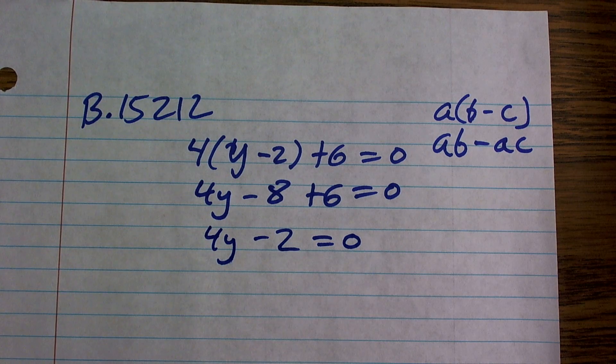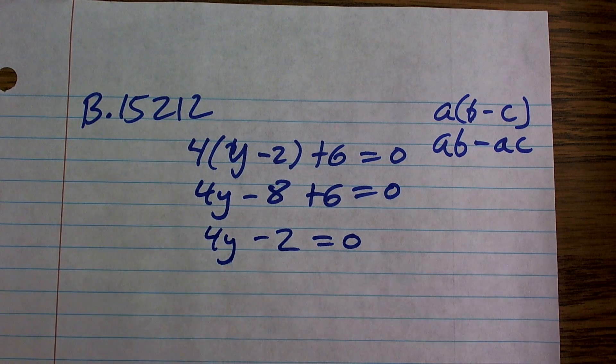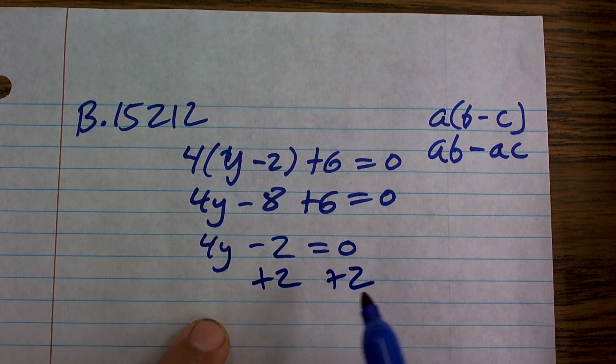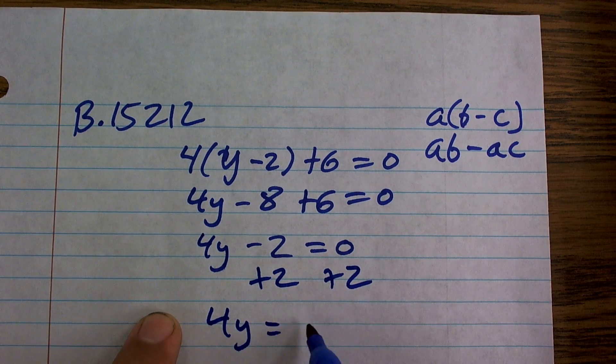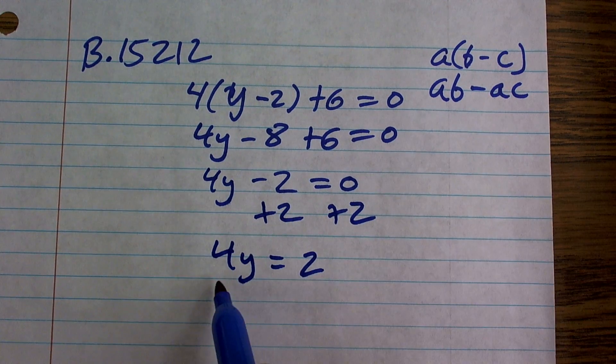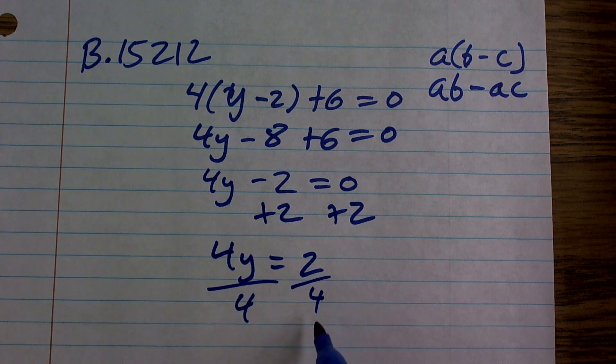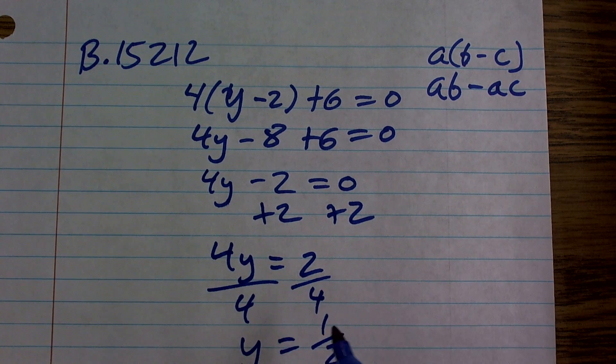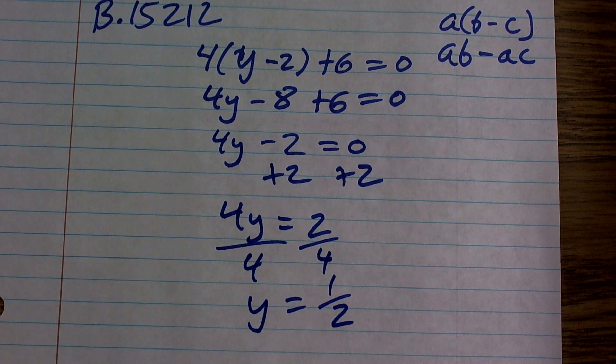So now what I need to do is, when I take a look at this, I can now solve this by adding a 2 onto the other side, and I get 4y equals a positive 2. Now, to solve, I need to divide by 4, and I get y equals 2 over 4, or which can be reduced down to 1 half.